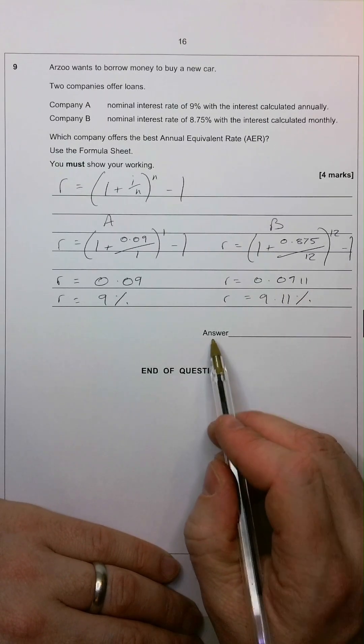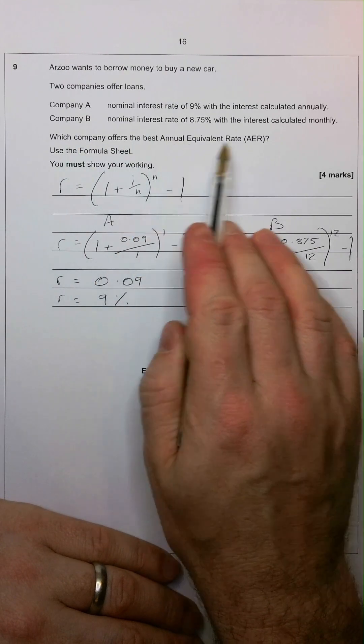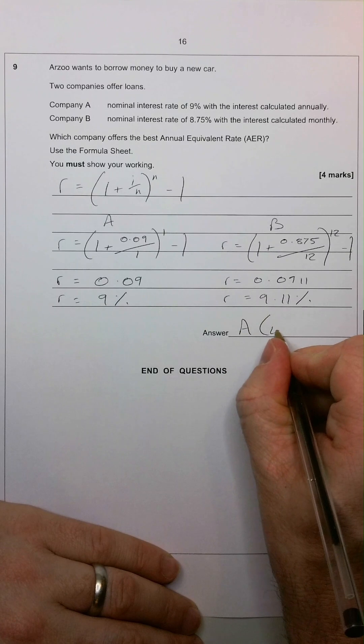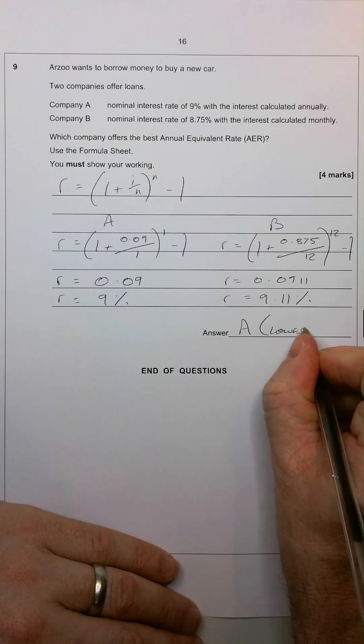So the answer, of course, to which company offers the best AER is actually A, because A is the lower of the two.